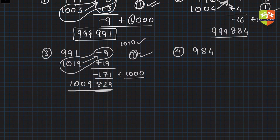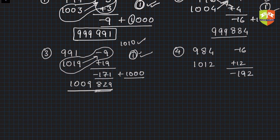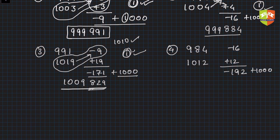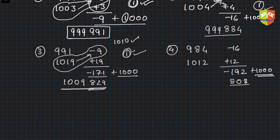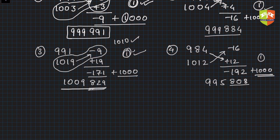Another example: 984 and 1012. This is minus 16 and this is plus 12. Now 12 times 16 comes out to be minus 192. Add thousand to it because it's a negative number: you get 808. So 808 is my HTU — hundreds, tens, units. Now the diagonal: 984 plus 12 is 996, subtract 1, so 995 is the product. The answer is 995,808.